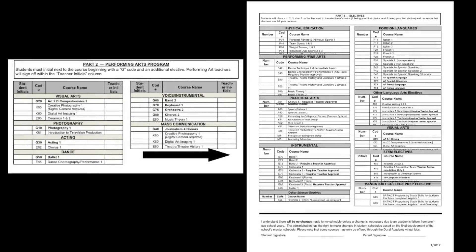Step 2: Choose elective courses. You will select your top five choices for electives, with one being your first and five being your last choice. Remember to number your choices clearly. Please do not select a class you have taken previously or are currently taking at a high school level. Performing arts students must select two elective courses in their area of major. You must take the first level of any elective course before taking the next level, two or three.